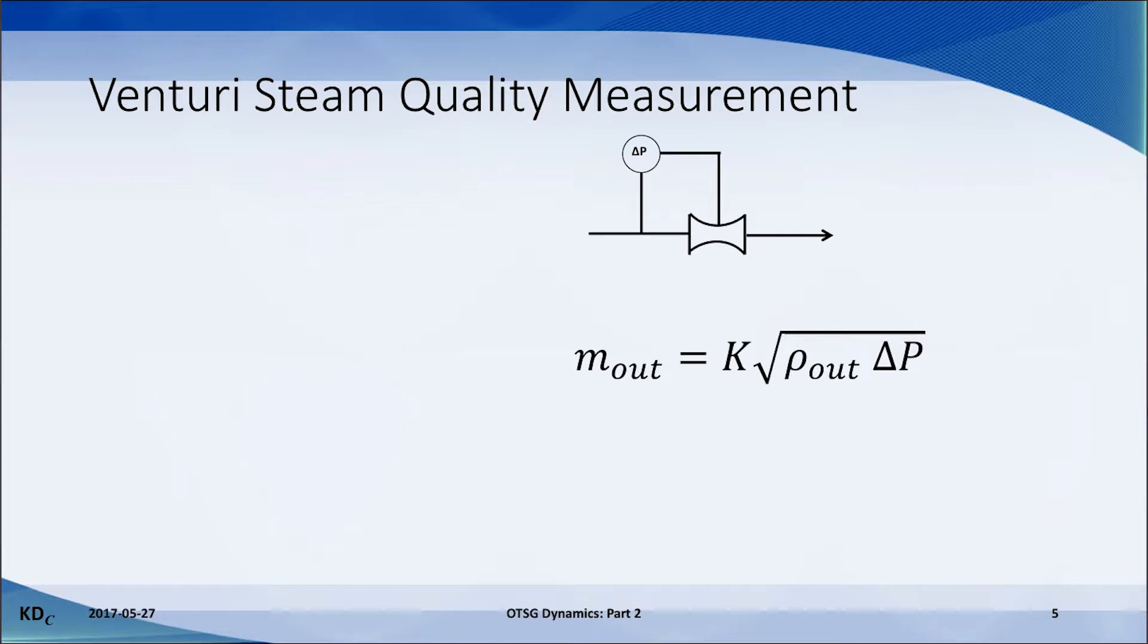Let's start with a standard venturi that is used to measure a flow rate. We measure the pressure drop across the venturi, we know the fluid density, and we are given the meter constant for the venturi. Then we use the venturi equation and we determine the flow rate.